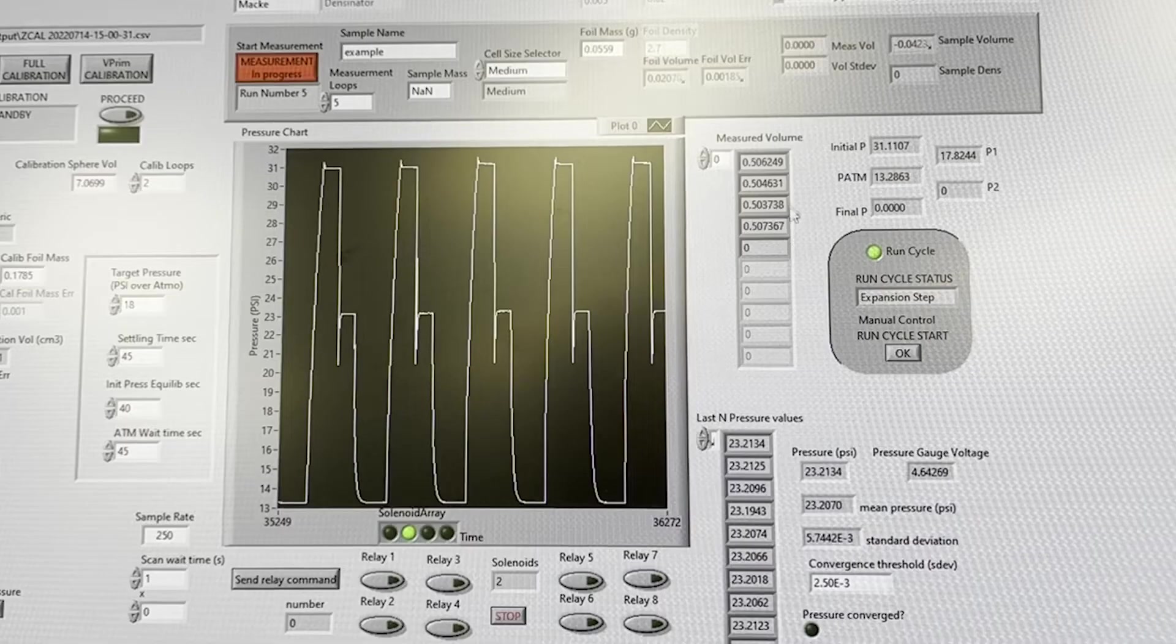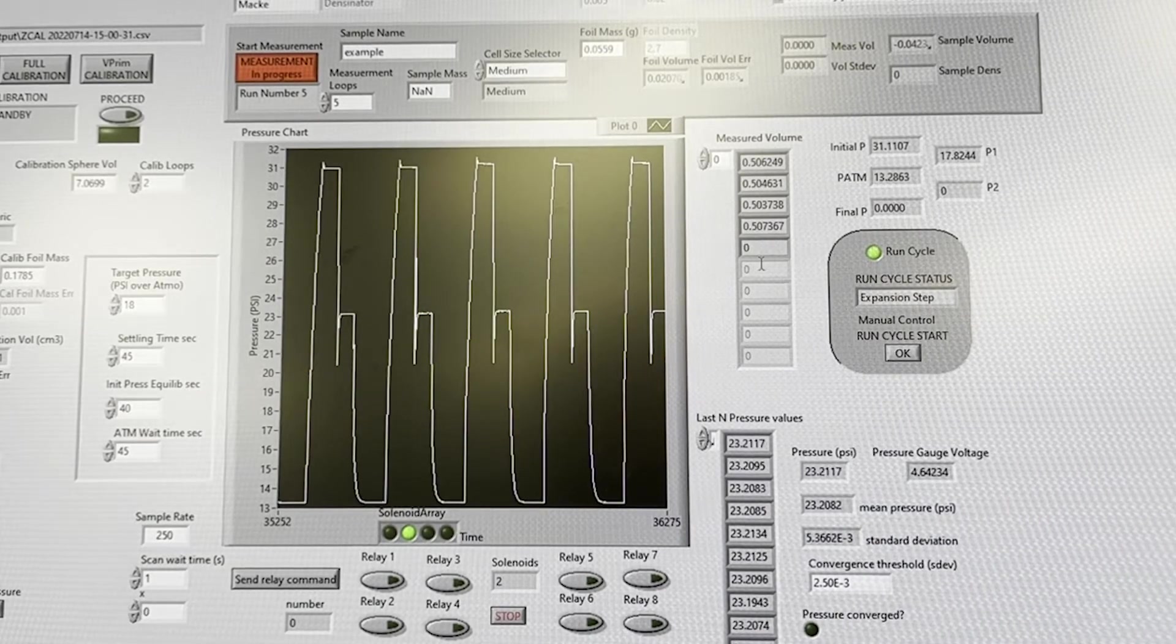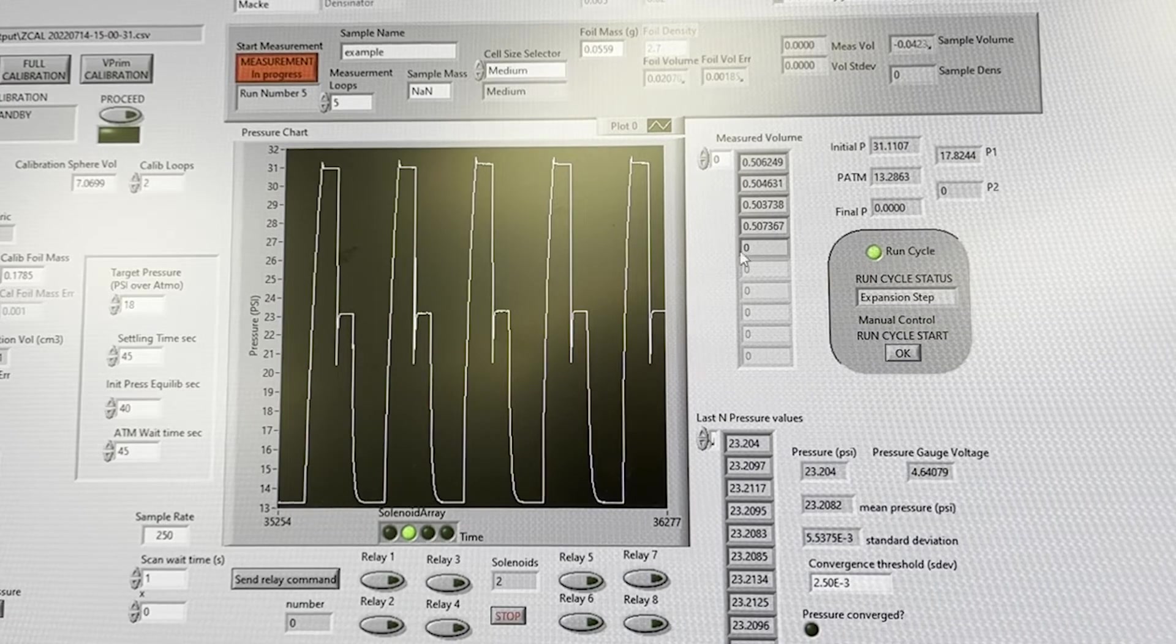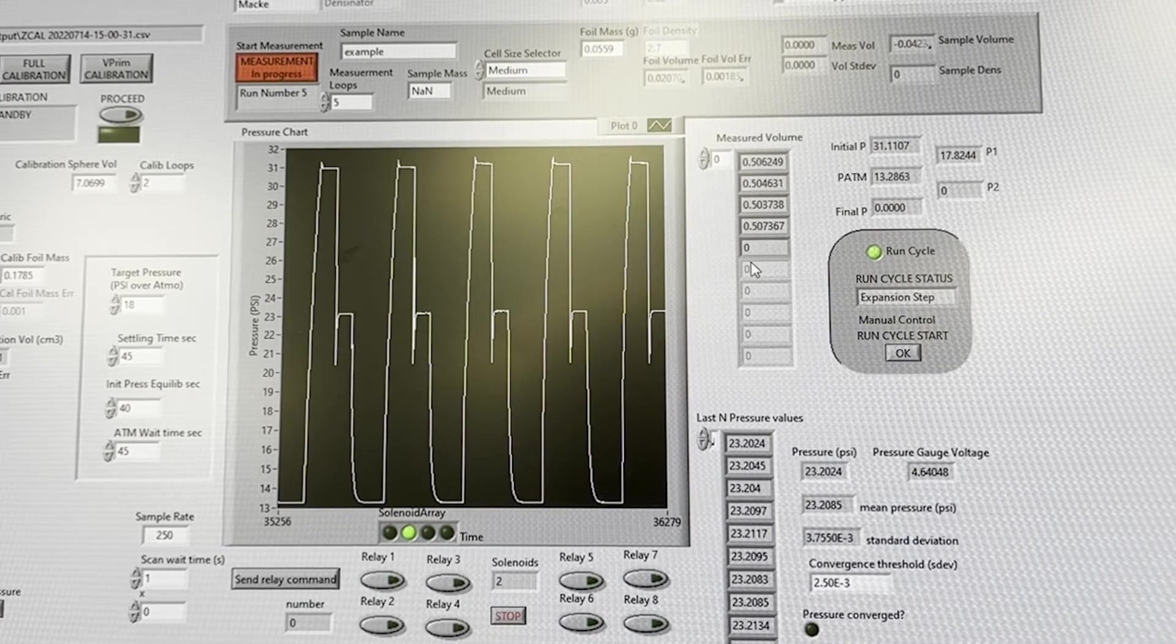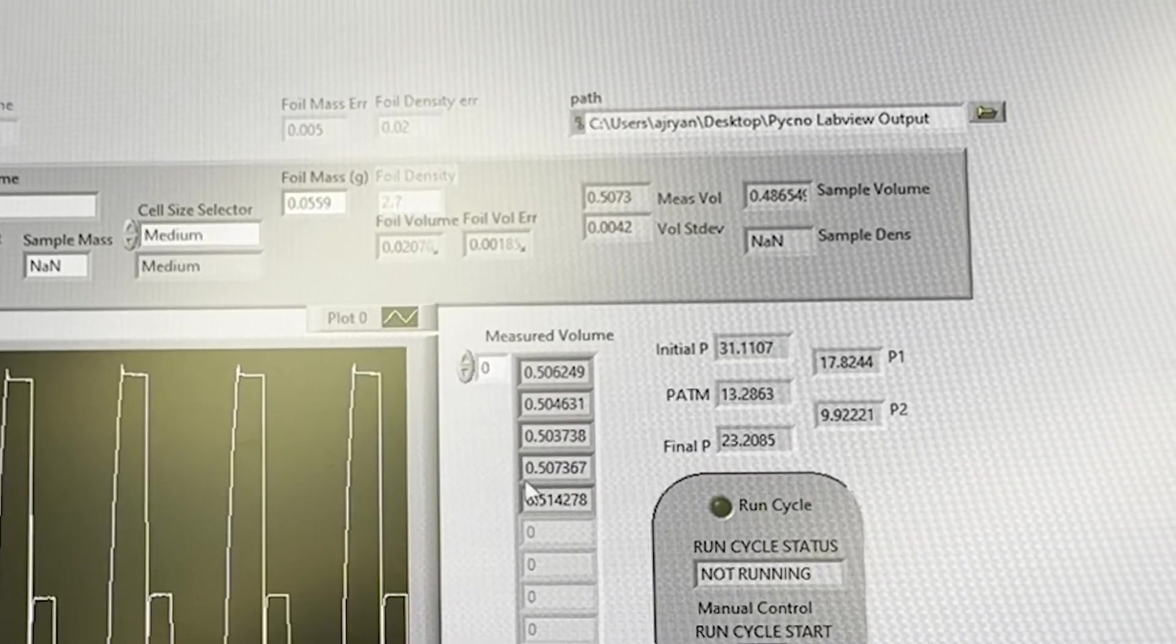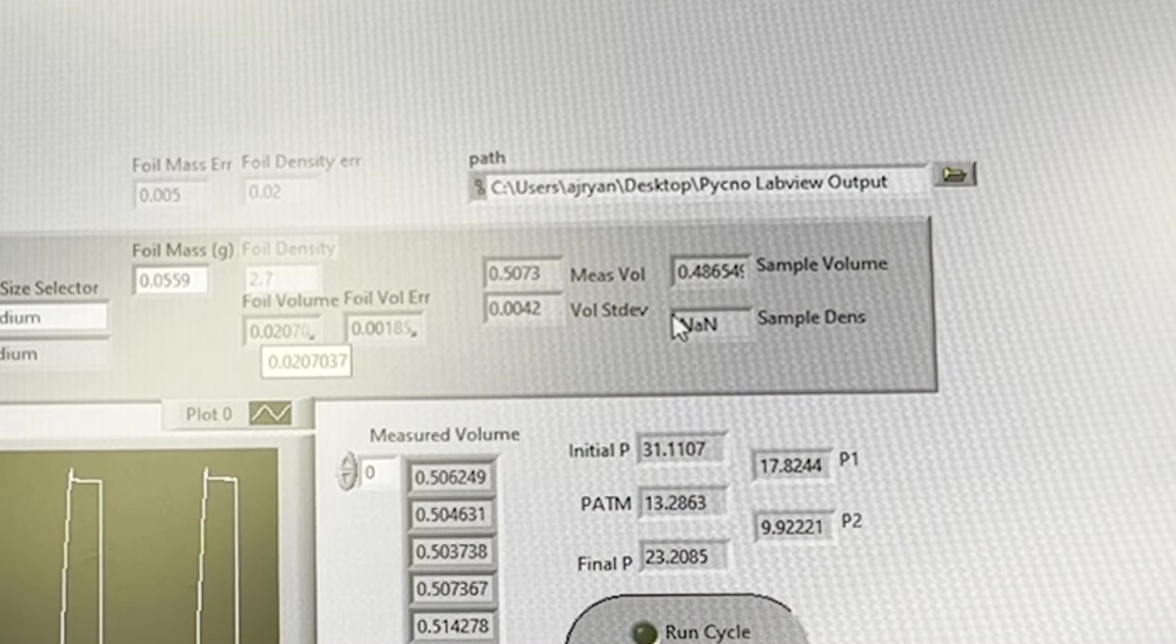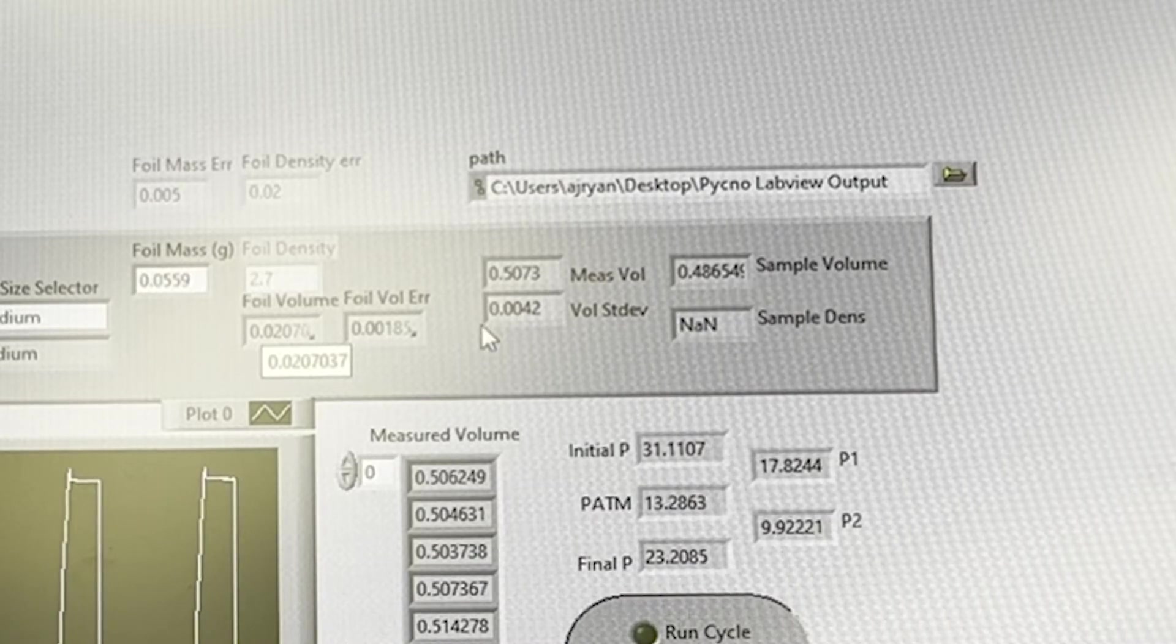At this point we can calculate the volume occupied by the stuff in the chamber. We'll do this several times. In this case I've programmed a run of five measurements. It's now just about done with the fifth. And once it finishes it calculates the average and outputs all the data to a file. The sample volume is slightly less than the average of the measurements because there is also some aluminum foil in there to serve as a liner.